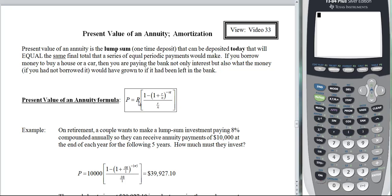We do not know what this grows to. We'd have to use different formulas for that. But we use this any time you borrow money to buy a house or a car and then you are paying the bank not only the interest but also what the money, if you had not borrowed it, would have grown to if it had been left in the bank.